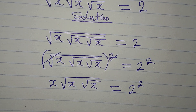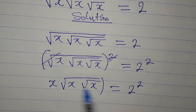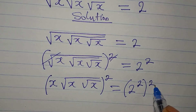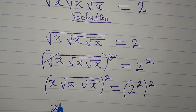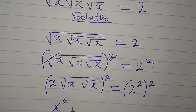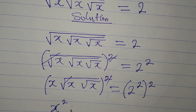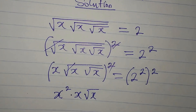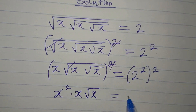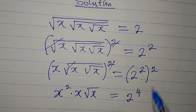We still have more square roots, so we square the whole expression again. x squared comes down, and we multiply through. On the other side we have 2 to the power of 4, because we multiply the exponents 2 and 2.